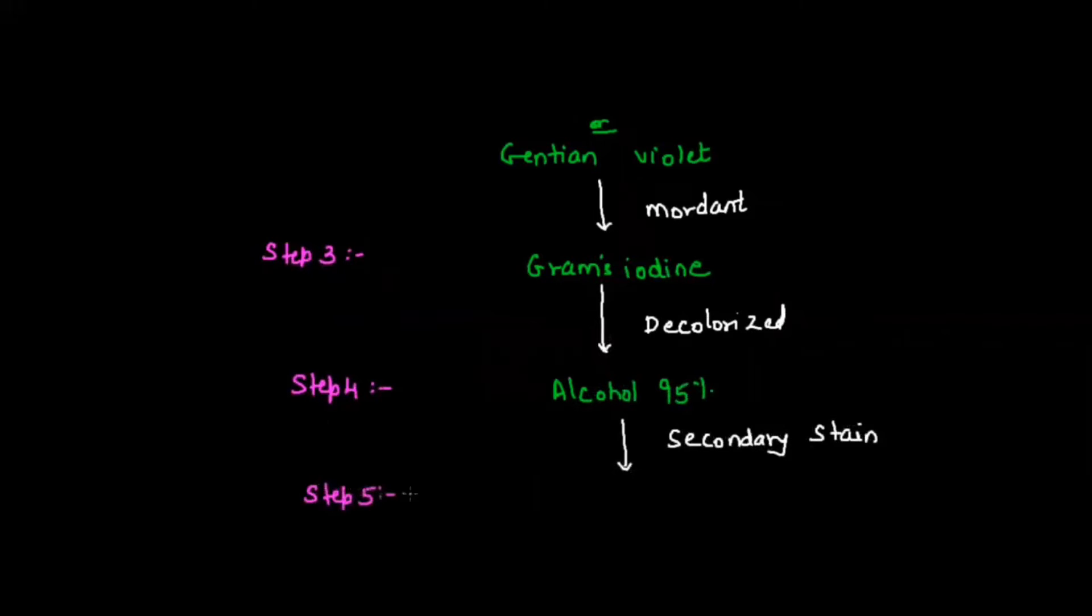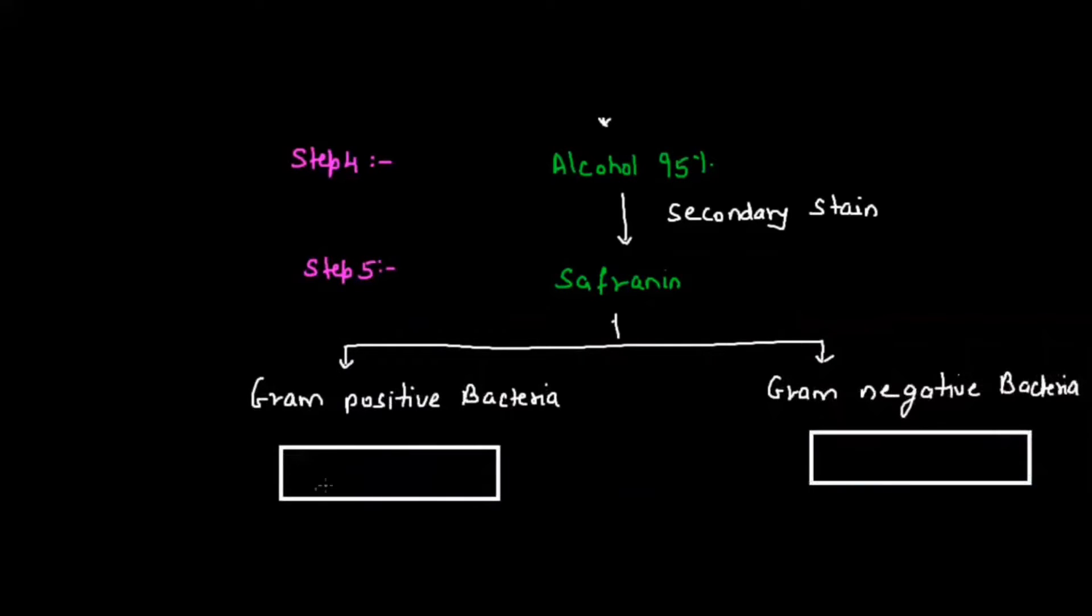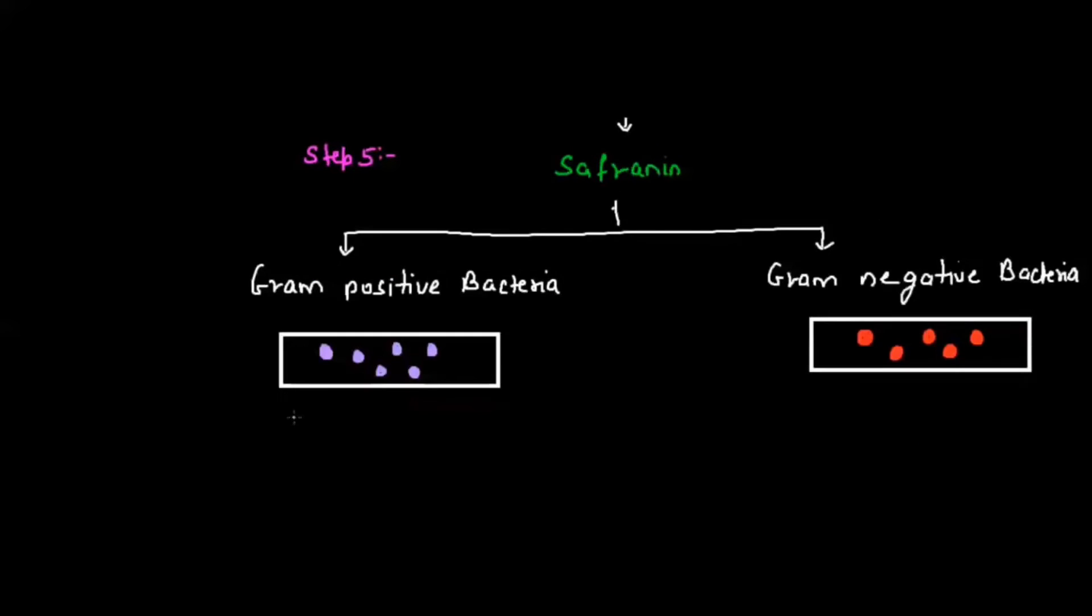Depending on the bacteria, it will take either the crystal violet primary stain or the secondary stain safranin. When I talk about Gram positive bacteria, you can see the crystal violet color, meaning the bacteria has taken the primary stain. This safranin colored bacteria is Gram negative.